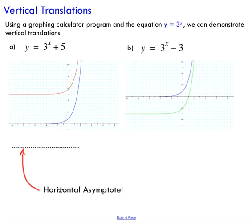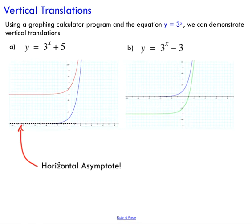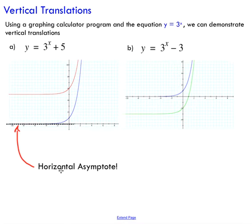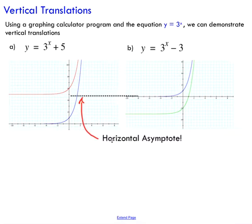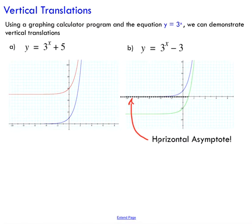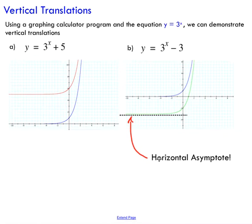Previously we talked about something called an asymptote — in this case a horizontal asymptote. By substituting numbers in for x, there's no way to turn 3 to the x into a negative number. You can't even get it to reach 0, because even negative x values just give a fractional result. That's why we have a horizontal asymptote at 0. If I move the function up by 5, I shift the horizontal asymptote up by 5 units as well — I approach 5 but never touch it. Similarly, shifting down by 3 means I can never touch negative 3.